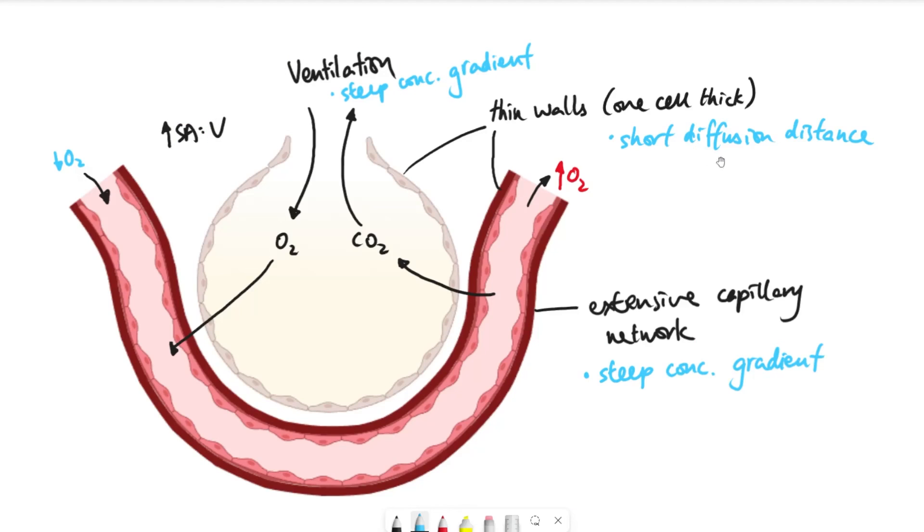And then the explanation is the blue bit here, which is about how do these adaptations work. Which is, the whole point is short diffusion distance, steep concentration gradient. All of it is about massively increasing the rate of diffusion. And remember that diffusion is to allow the oxygen to go into the bloodstream and the carbon dioxide to go out, which is the whole point of gas exchange.